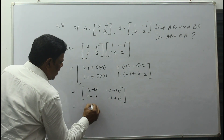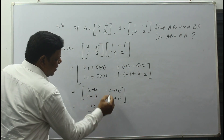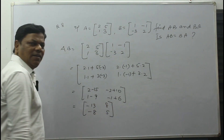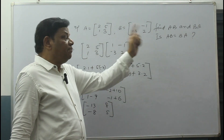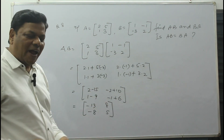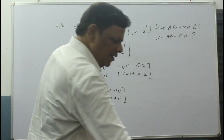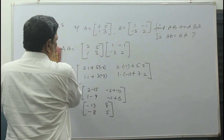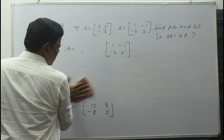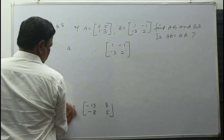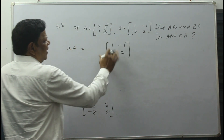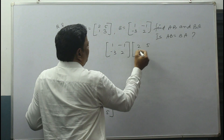So AB = [[-13, 8], [-8, 5]]. Now I have to find BA also. For BA, B is written first: B = [1, -1, -3, 2] and A = [2, 5, 1, 3]. Now this is A, B, C, D and the other is X, Y, M, N for the formula.